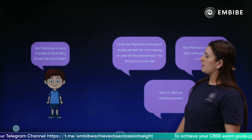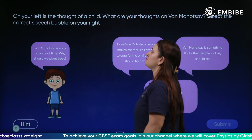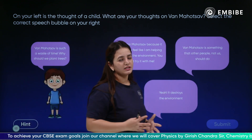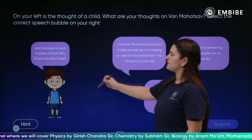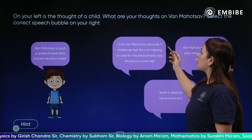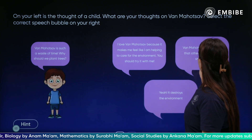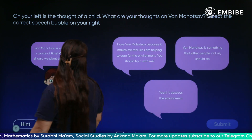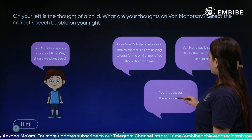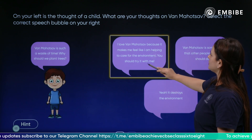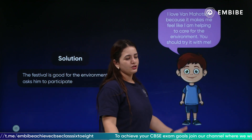Moving forward, here is a question: what are your thoughts on Van Mahotsav? Select the correct speech bubble. The options are: Van Mahotsav is a waste of time; Van Mahotsav makes me feel like I am helping the environment; it destroys the environment; or Van Mahotsav is something other people, not us, should do. The correct answer is: Van Mahotsav is something I love and I would like to plant more and more trees, helping my nature and the environment.